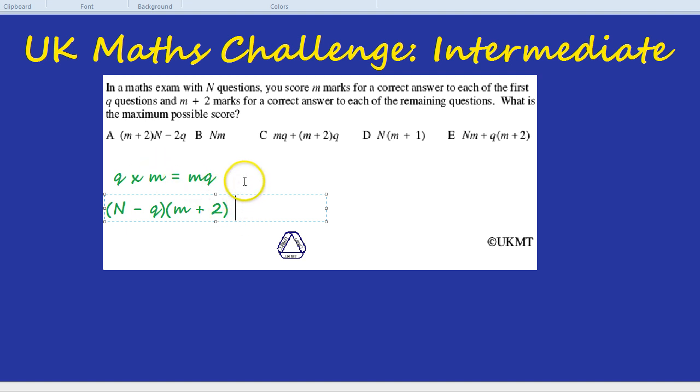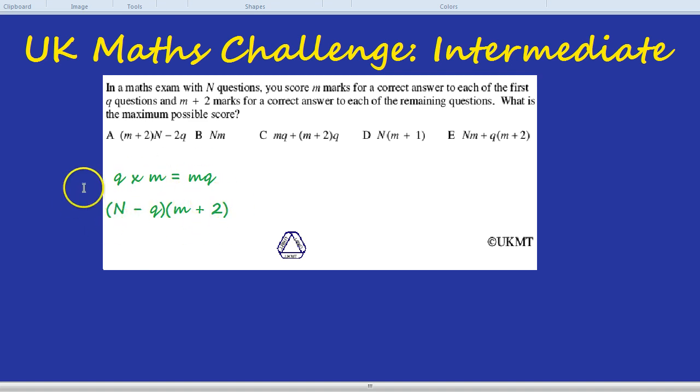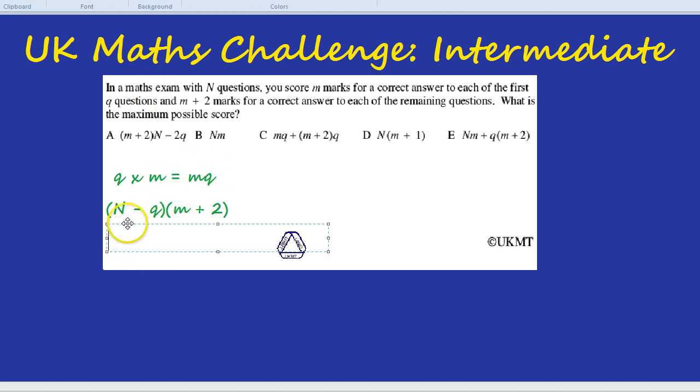Let's work that out. There are many different ways of doing double brackets like this. But we could do the FOIL method which is the first multiplication, then the outside multiplication, then the inside Q and M, and then the last so Q times 2. Let's have a go at that. So we have N times M which is NM.